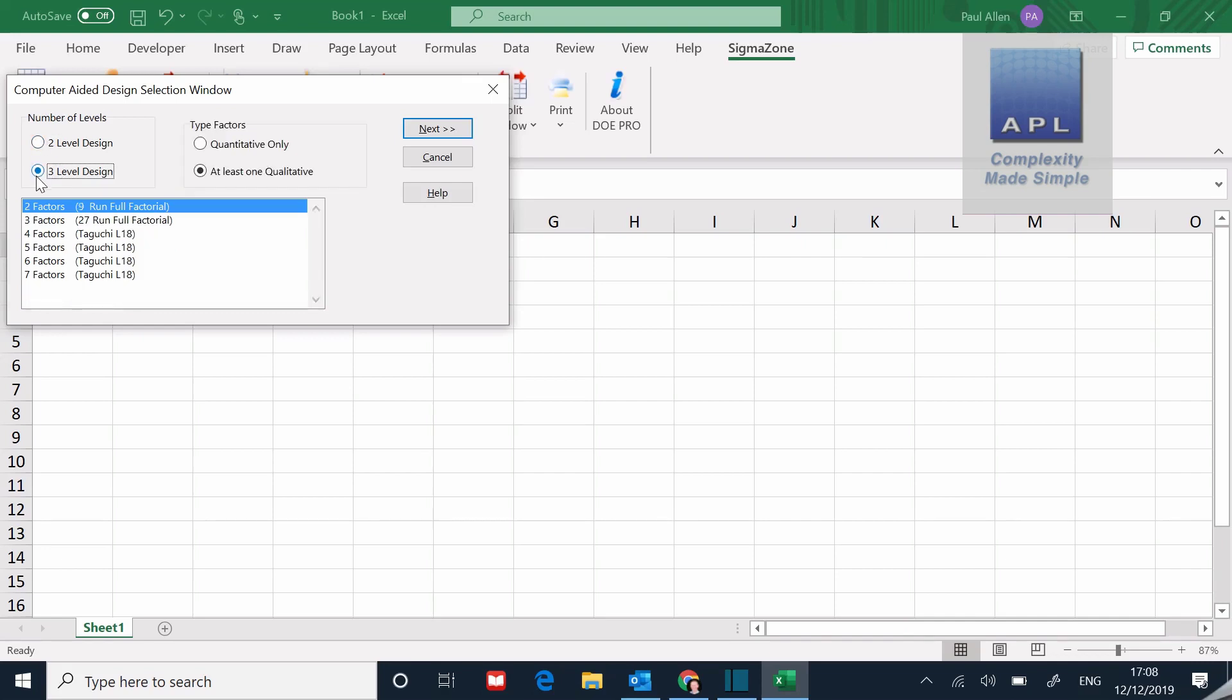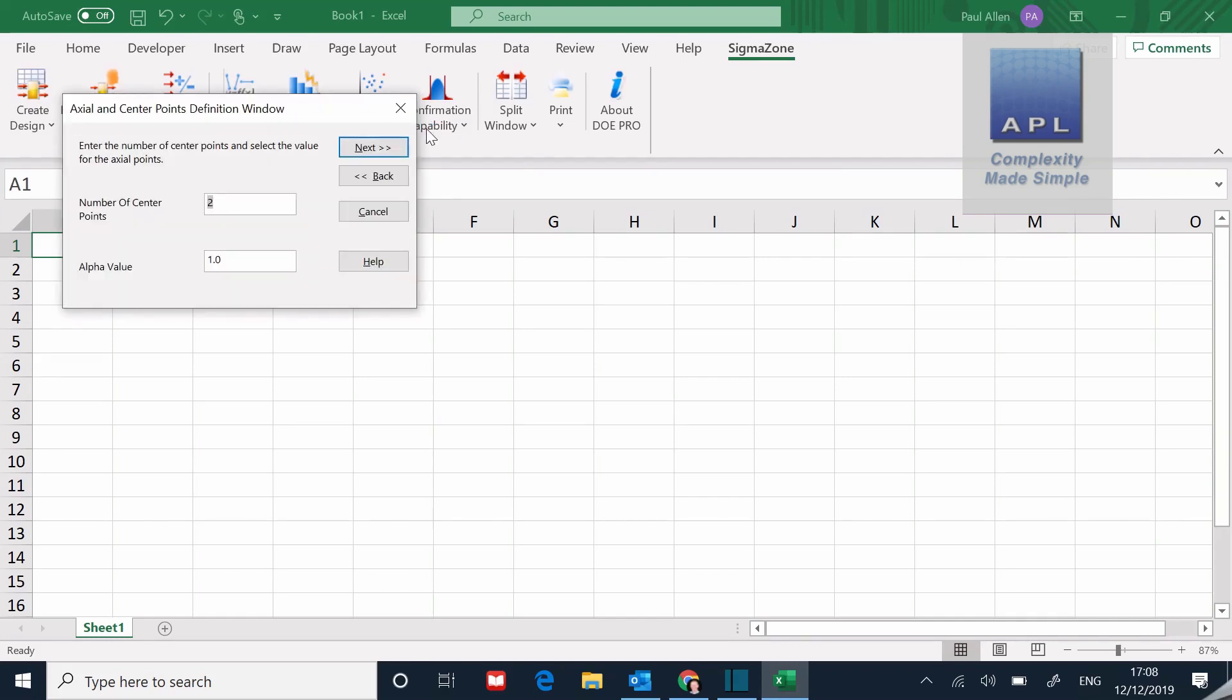You can see I can change this little radio button here. I'm obviously going to go three level because the central composite is a three level design. So let me pick three level, and then he asks me the question, is it quantitative only? Well if I check that little radio button there, I get the central composite as a choice. So you can see, look, four factor central composite design - I can easily choose that and that's what I'm going to choose. So I click on that and it then starts to ask me questions about what variables do I want.